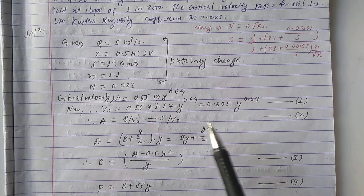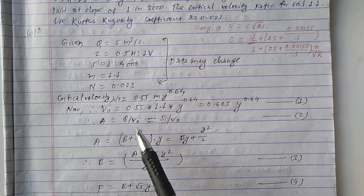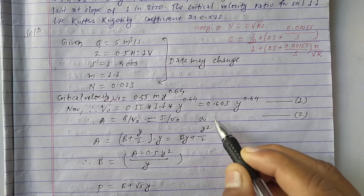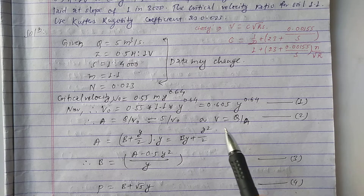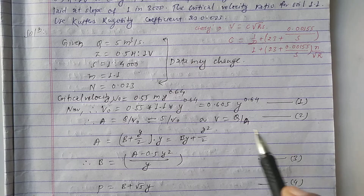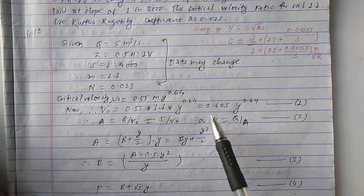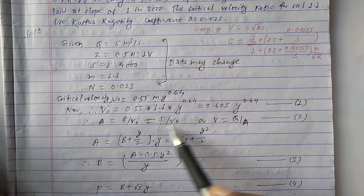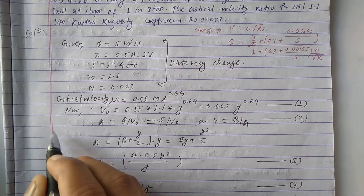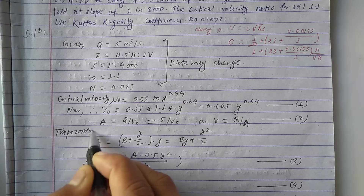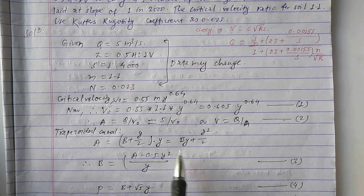Once the critical velocity is known, we calculate the flow area using A = Q / V₀, which gives A = 5 / V₀. Let this be Equation 2. For a trapezoidal canal, the area formula is A = by + 0.5y², where b is the base width and y is the depth.